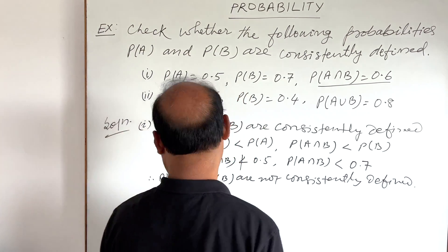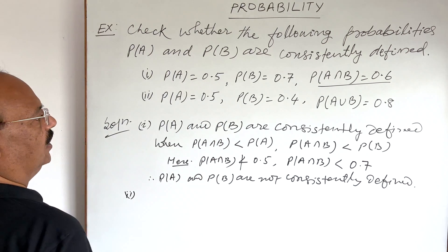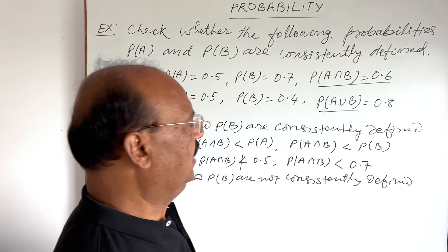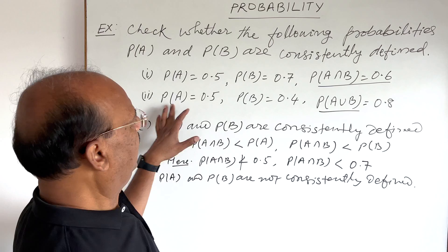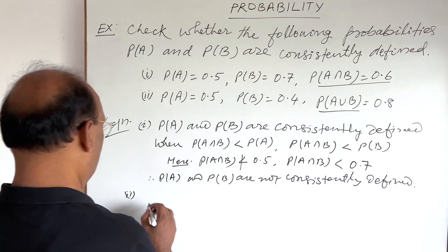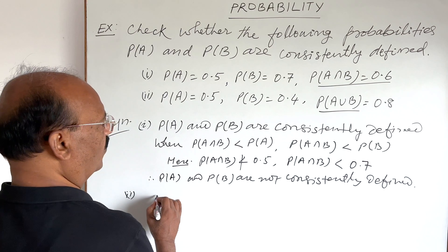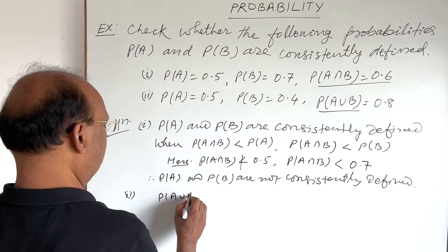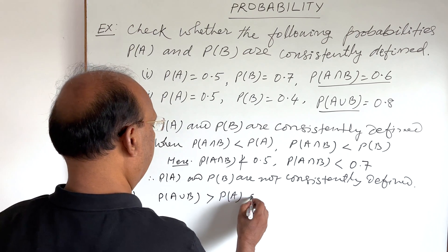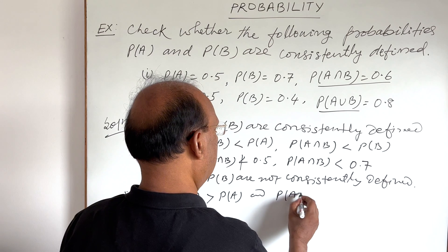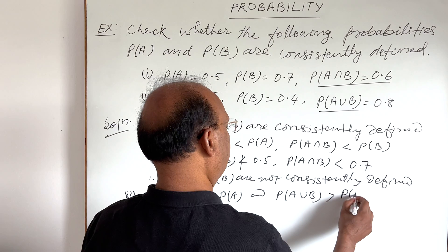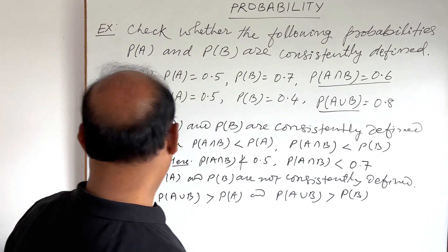Okay? And, second part, here we have to see that this is probability of P(A union B). So, P(A) and P(B) will be consistently defined when P(A union B), this is greater than P(A). So, for the second part, let us check it.